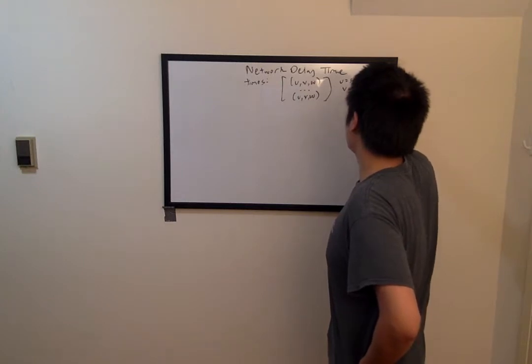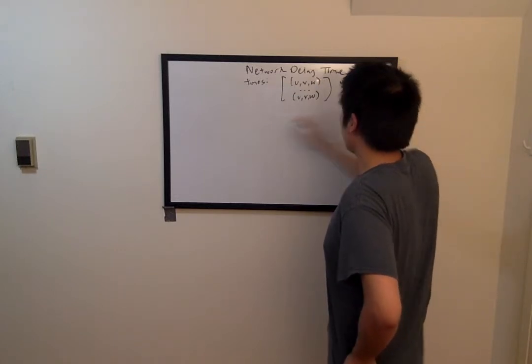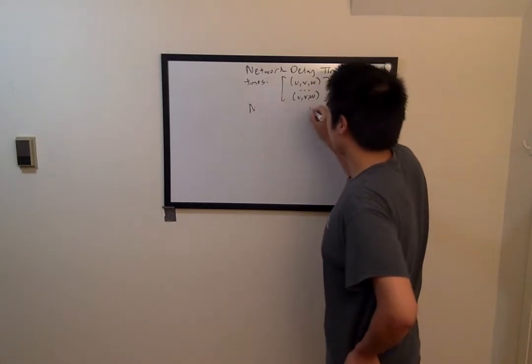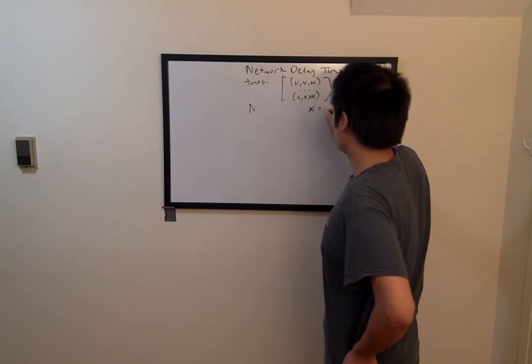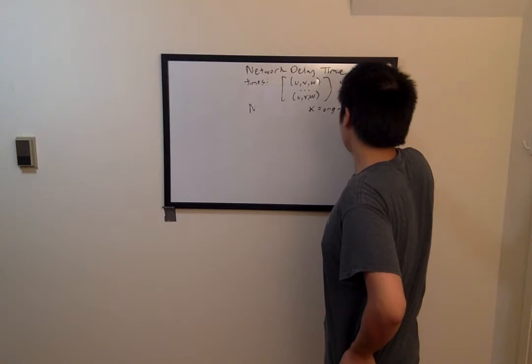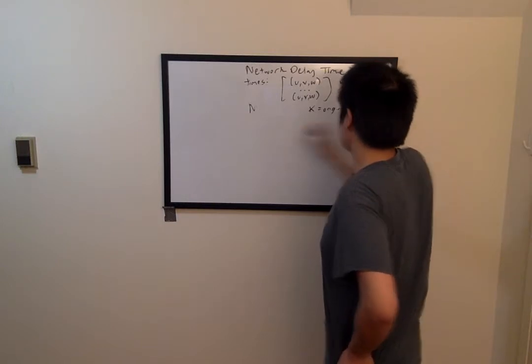v is the destination vertex, and w is the weight. In addition, you're given the parameters n and k, where k is going to be the origination vertex, and n is the number of vertices.